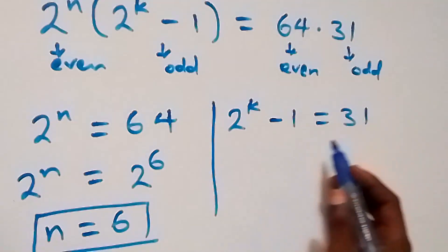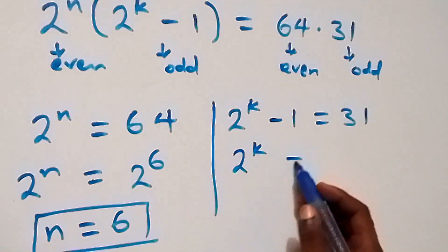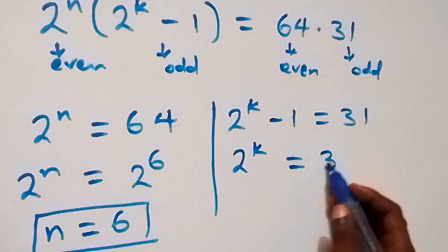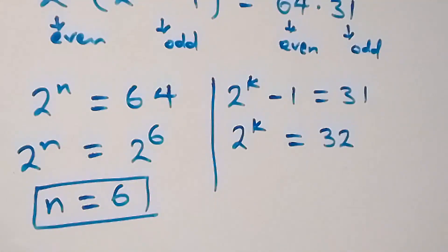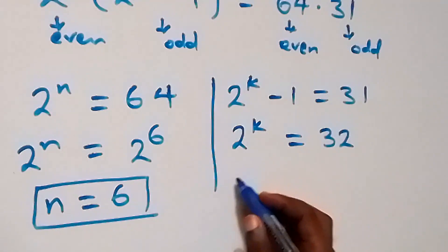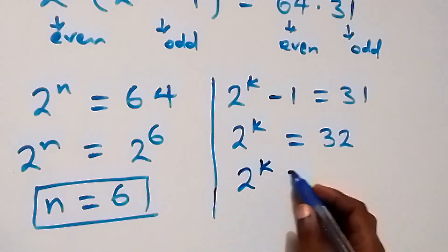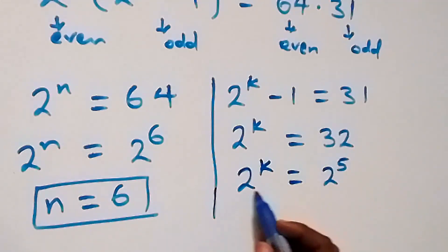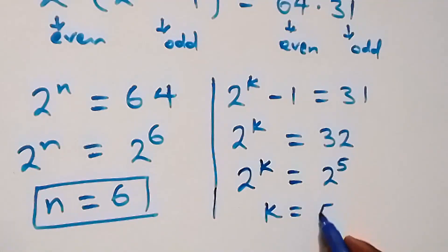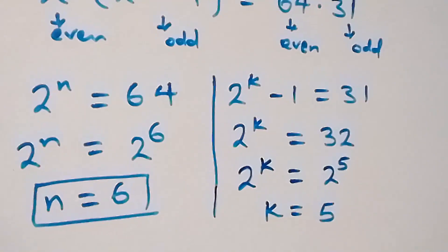Taking minus 1 to the other side gives plus 1, so 2 raised to power k equals 31 plus 1, which is 32. And 32 can be written as 2 raised to power 5. Equating the powers, we get k equals 5.